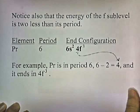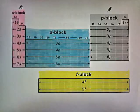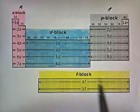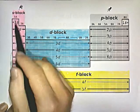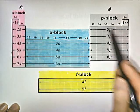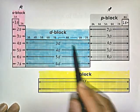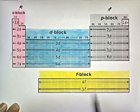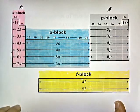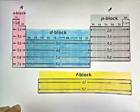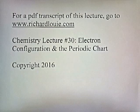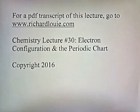Quick summary: s-block elements are groups 1A and 2A; p-block elements are 3A through 8A; d-block elements are the transition elements; and f-block elements are the lanthanoids and actinoids at the bottom of the periodic table. For a PDF transcript of this lecture, go to www.richardleuie.com. This has been Chemistry Lecture Number 30: Electron Configuration on the Periodic Chart.